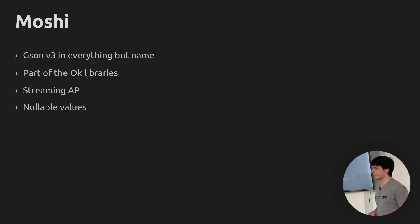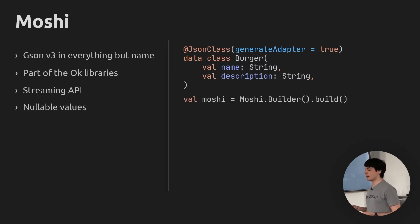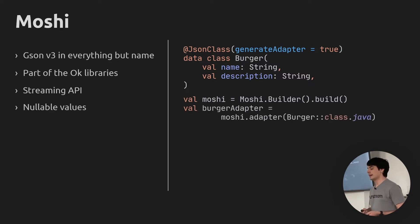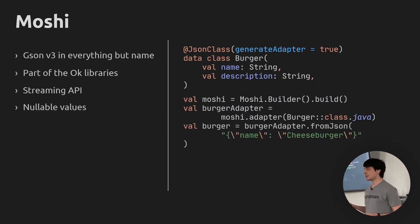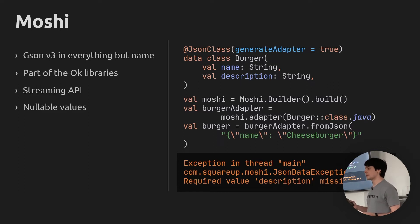Moshi is also really aware of Kotlin, which is great. This is one of the huge problems with Gson — it doesn't interpret Kotlin language features at all. For example, Moshi can handle nullable values. Take this Burger class which has a name and description. If we create a Moshi instance with the default builder and grab an adapter to serialize or deserialize burgers, we can use the fromJson method to parse a string into a burger. My burger had two properties, but the JSON string only has one of them specified. Moshi would recognize this, see that description is a required value, and fail immediately while parsing — whereas Gson would just leave a null value in description despite the type being non-nullable.